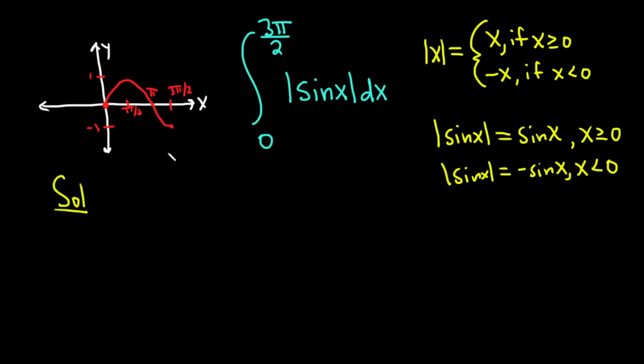Solution. So we have that the integral from 0 to 3 pi over 2 of the absolute value of the sine of x with respect to x, so dx, is equal to. So again from 0 to pi it's above the x-axis so it's positive. So the absolute value of sine x is equal to sine x.